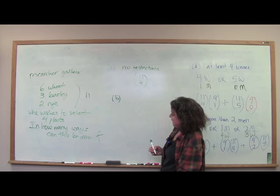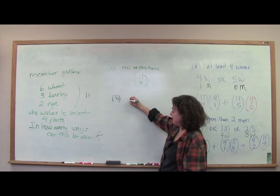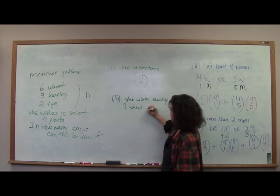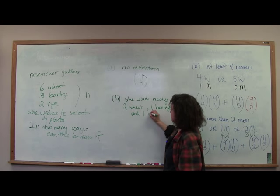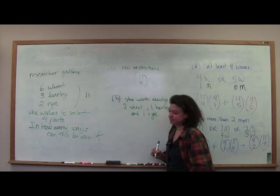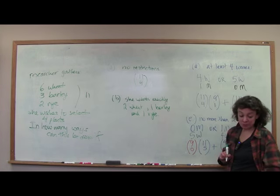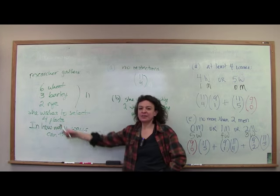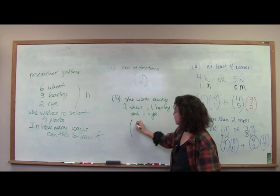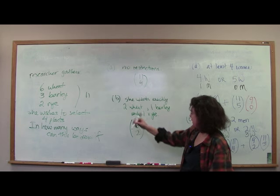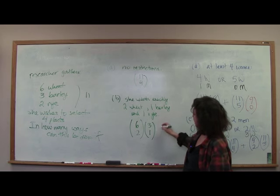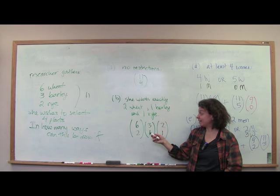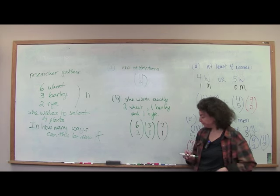In how many ways can she select 4 plants if she wants exactly 2 wheat, 1 barley, and 1 rye? Break it down by category: 6 wheat choose 2, AND 3 barley choose 1, AND 2 rye choose 1. We multiply across because it's 'and' — 2 wheat and 1 barley and 1 rye.